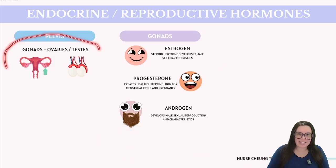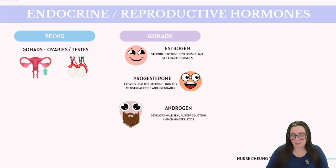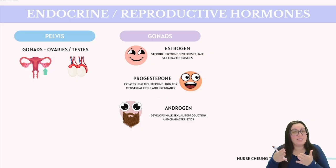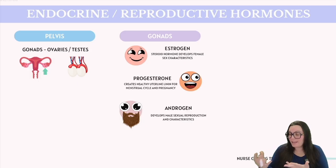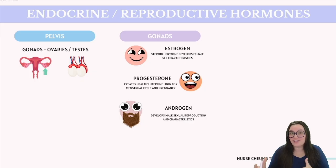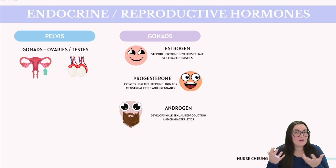The gonads produce several important hormones. The ovaries produce estrogen, which primarily promotes the growth of the uterine lining and the development of female secondary sex characteristics. Additionally, the ovaries produce progesterone, which supports and maintains uterine lining growth and plays a vital role in fetal development during pregnancy. The testes produce androgens such as testosterone, which are essential for sperm production and the development of male secondary sex characteristics. It's important to note that while estrogen, progesterone, and testosterone are present in all individuals, their concentrations and primary functions vary — estrogen and progesterone play more significant roles in females, whereas androgens like testosterone are more concentrated and predominantly function in males.